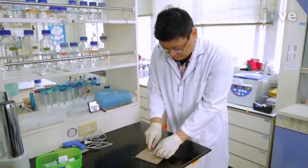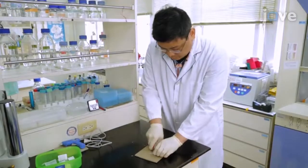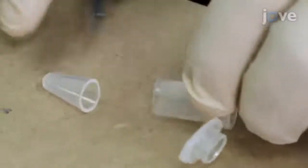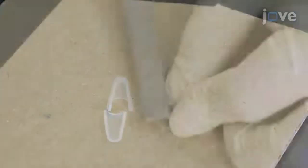To begin, make a holder to use neonatal pups in a stereotaxic apparatus. First, make the head tray. Cut off about one-fifth of the bottom of a 1.5 milliliter centrifuge tube to make an opening for the head of a neonatal pup.